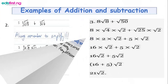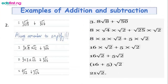The first example is 3 root 18 plus 3 root 6. Root 18 can be simplified as 9 times 2, but root 6 cannot be simplified because no perfect square factor exists. Root 9 is 3, and 3 is already outside, so they multiply: 3 times 3 gives 9. At the end of the day we have 9 root 2 plus 3 root 6.